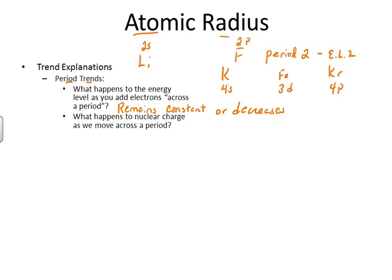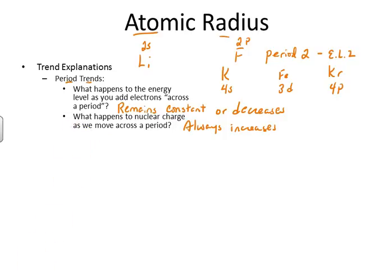The second question is what happens to nuclear charge as we move across a period? Nuclear charge always increases — each element to the right has one more proton, so its nuclear charge increases by one.